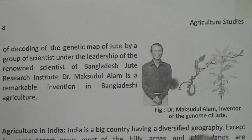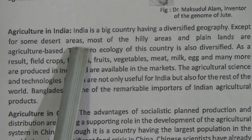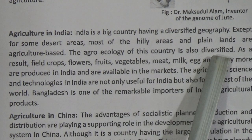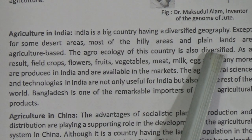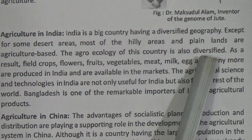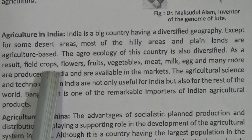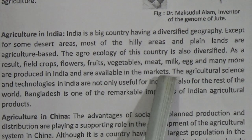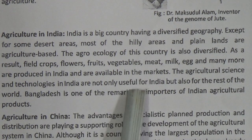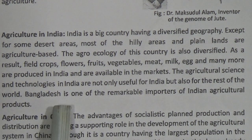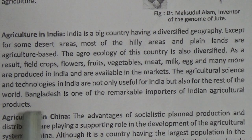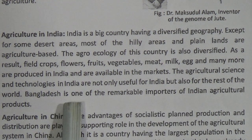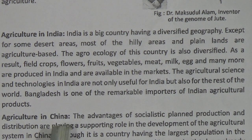Agriculture in India: India is a big country with diversified geography. Except for some desert areas, most hilly areas and plain lands are agriculture-based. The agroecology of this country is also diversified. Crops, flowers, fruits, vegetables, meat, milk, eggs, and many more are produced in India and available in markets. Agricultural science and technologies in India are not only useful for India but also for the rest of the world. Bangladesh is one of the notable importers of Indian agricultural products.